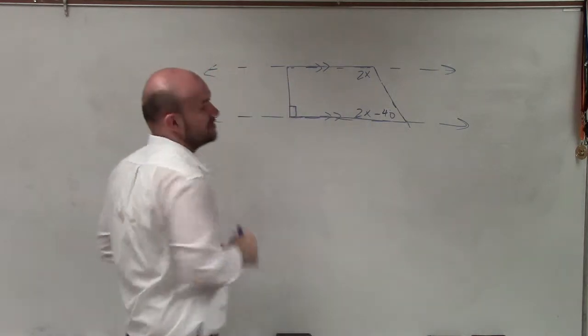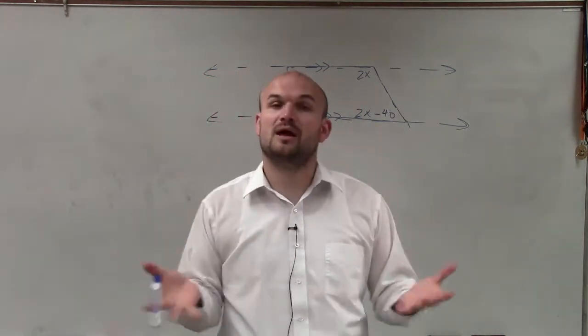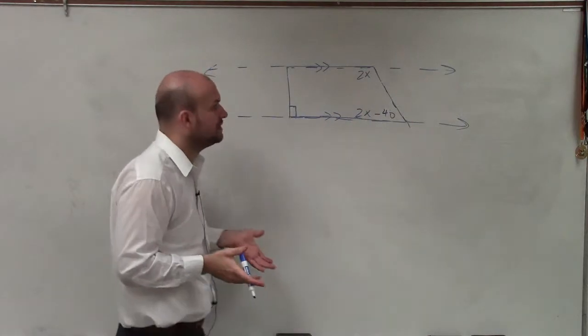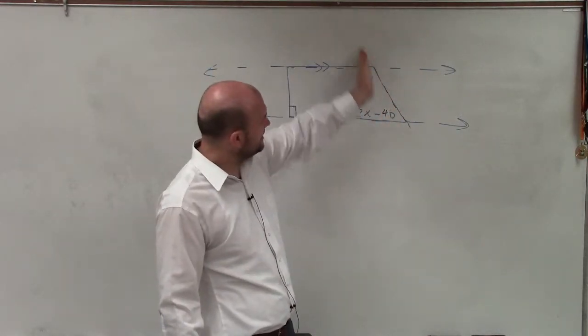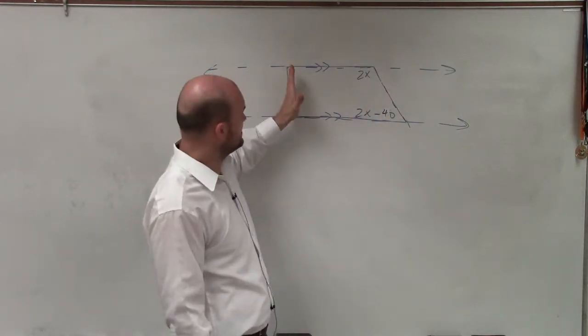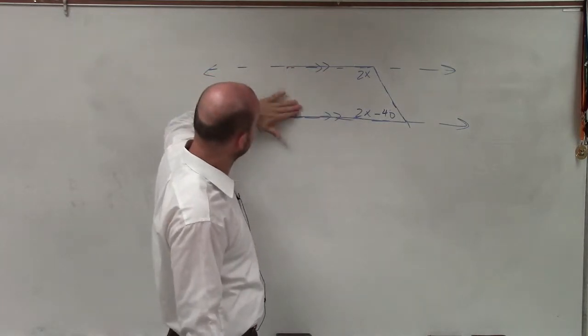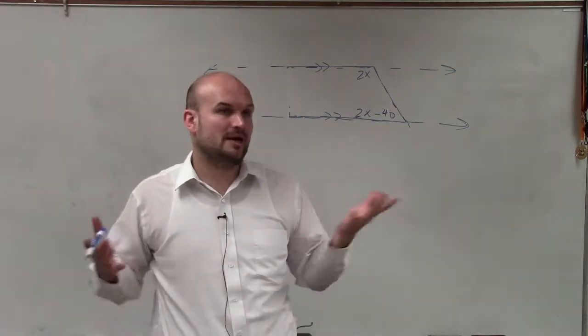When we're looking at angle relationships, remember we're looking for parallel lines as well as a transversal, a line that's going to intersect those parallel lines. And I can see that this line intersects the parallel lines. This one does not. So I'm just going to erase this because it's not really affecting our problem at all.